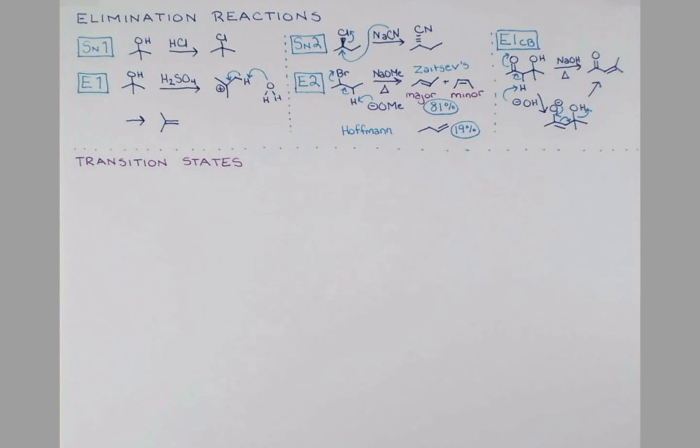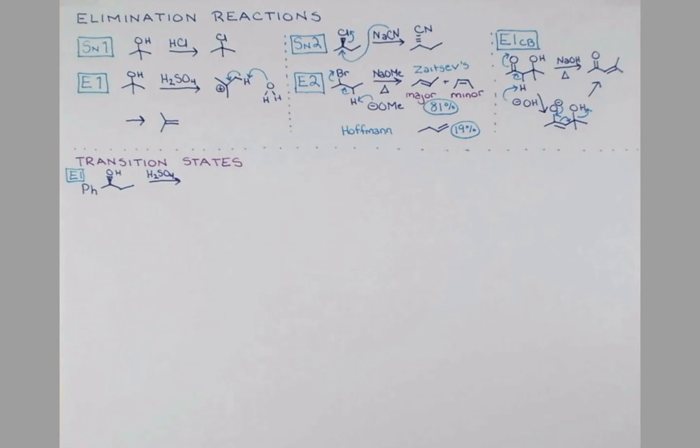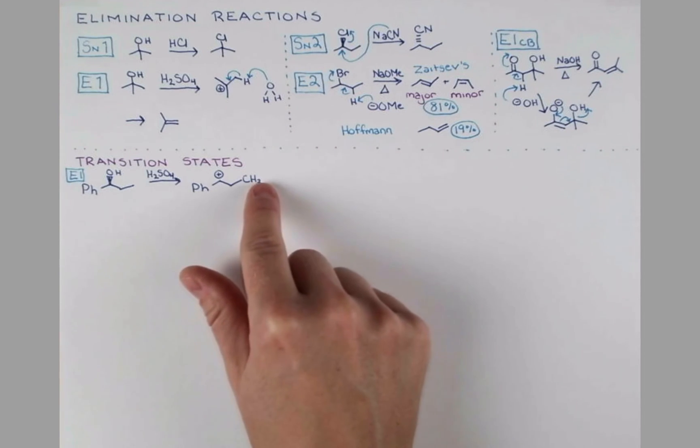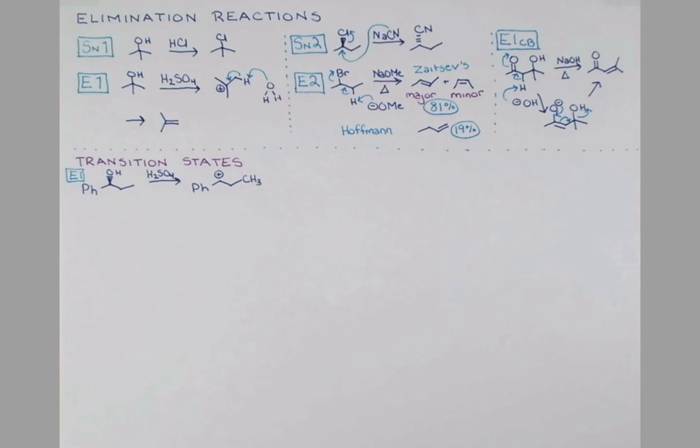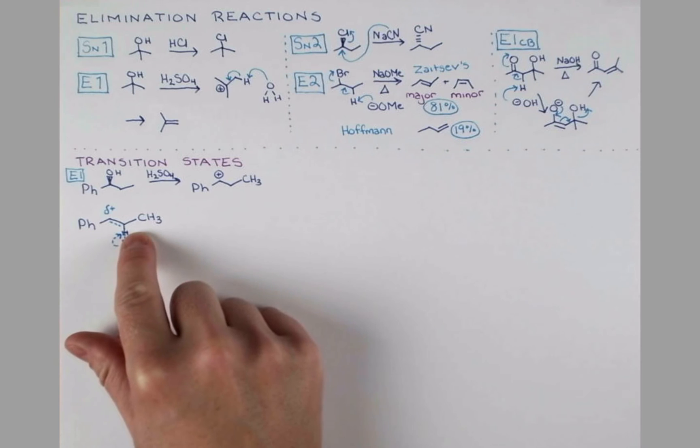Now, in this particular E1 example, we had this symmetrically substituted carbocation. It eliminated and doesn't really give an E or Z alkene since we don't have substituents on this side. Let's look at an example where we get the E alkene and we have a choice between E and Z. If we treat this with H2SO4, we'll produce a carbocation. Now, a base is going to come in and deprotonate here.